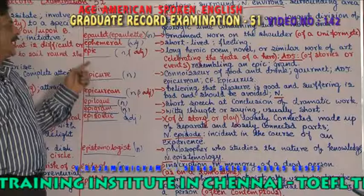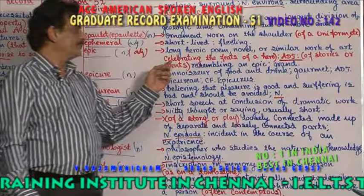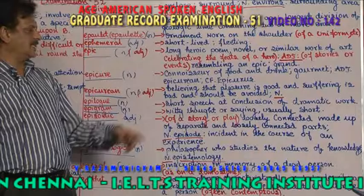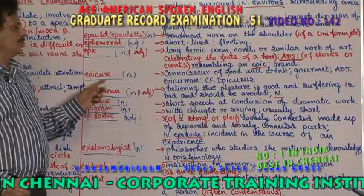Epic — it is a long heroic poem. A long heroic poem is called epic. Mahabharata is an epic novel or a similar work of art, celebrating the feats of a hero. The adjective is epic, resembling an epic — grand.